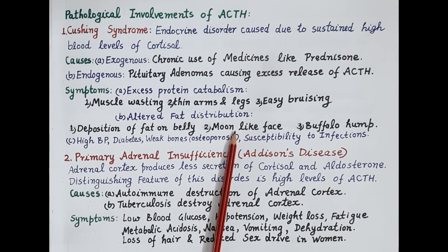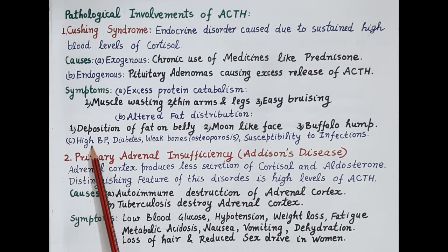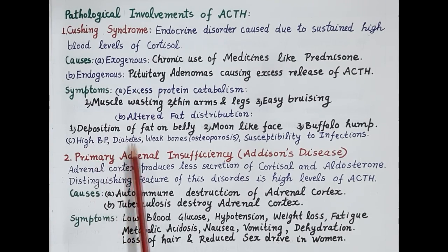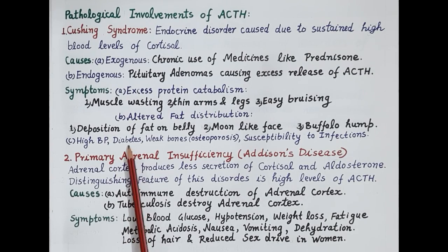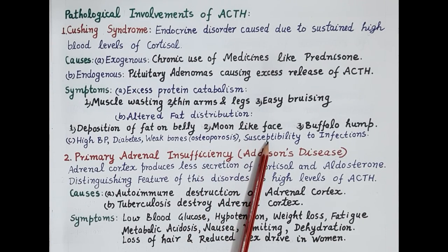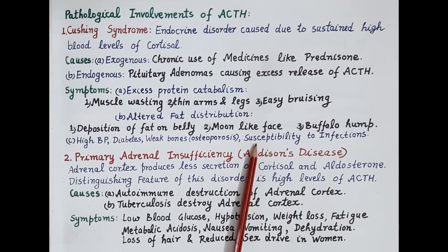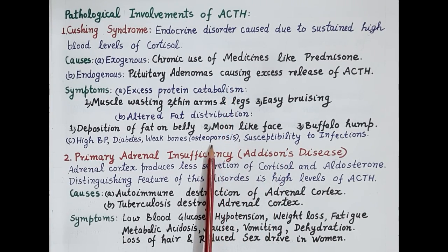The face becomes round, which is called moon face, and fat also deposits on the back between the shoulder blades, called buffalo hump. Cortisol also increases sensitivity of blood vessels to adrenaline and noradrenaline, causing high blood pressure. High cortisol increases blood glucose levels, raising the risk of diabetes. It also causes weak bones, increasing the risk of osteoporosis. Since high cortisol is an immunosuppressant, susceptibility to infections also increases.